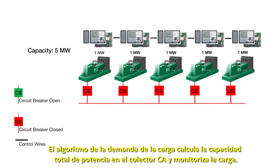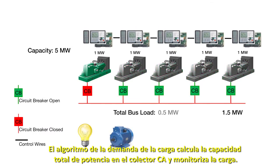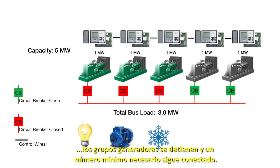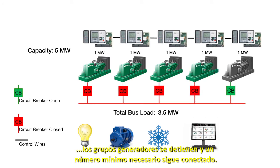Simply put, the load demand algorithm calculates the total power capacity on the AC bus and monitors the load. If the capacity is significantly higher than the connected loads, generator sets are stopped and the minimum number needed stay connected.